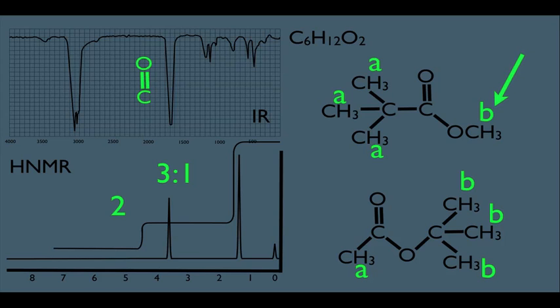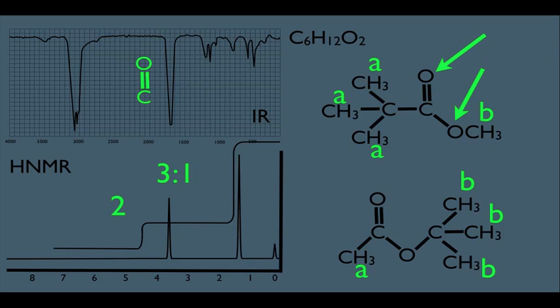Let's see if shifting can help us narrow it down. For the top molecule, the B hydrogens are actually close to this oxygen and also close to the carbon doubly bonded to the oxygen — these items cause hydrogens to be very shifted. Whereas the A hydrogens are connected to a carbon that's connected to another carbon and then to the carbonyl carbon. So the B hydrogens are closer to the oxygens and should be more shifted — this should be our B hydrogen peak, and therefore this should be our A peak. The top molecule fits all four aspects of the HNMR.